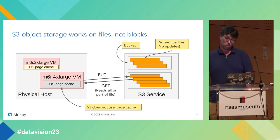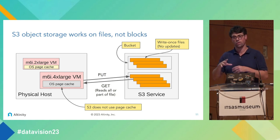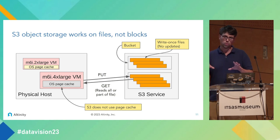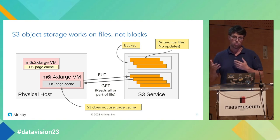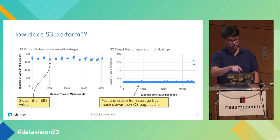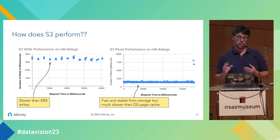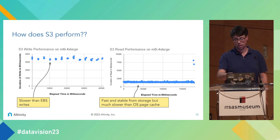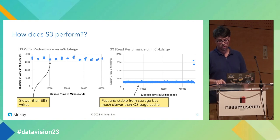S3 is the third storage type — the slowest of the three, but it fits different workloads and installations. Unlike block storage, S3 doesn't present a block device; you work with files via API calls. Every cloud provider charges per API call, so you have to be careful, but overall it's a very cheap way to store data. It doesn't use page cache, so the write profile is very flat and normal, and reads are slower but very sustained over time.